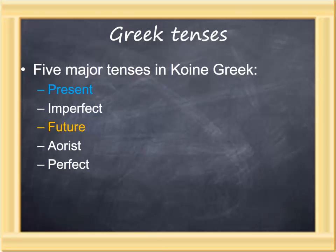We have been looking at the Greek verb, the most important word in the Greek sentence, and have learned previously that there are five major tenses in Koine Greek: the present, imperfect, future, aorist, and perfect. We have looked at two of those tenses, the present and the future.